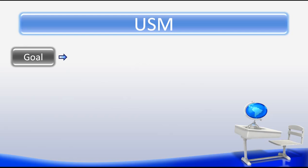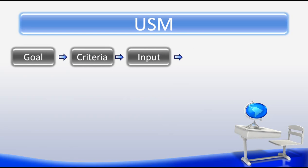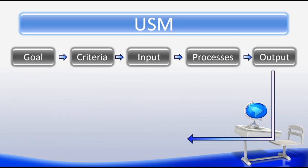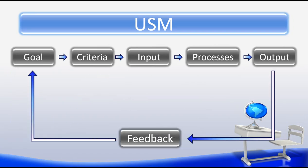The USM is made up of six steps. These steps define a system. Every new or improved technology must use the USM in order to produce a technology. The first step in the USM is the goal. The next step is the criteria. Following that step is our inputs. Our inputs has seven subsystems with it. The following step would be processes. And then next we have outputs. And finally, rounding out the entire system, we have our feedback.